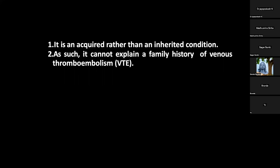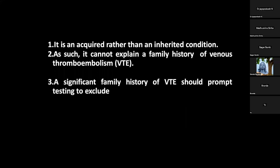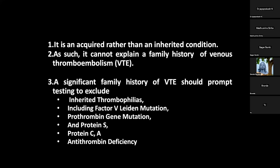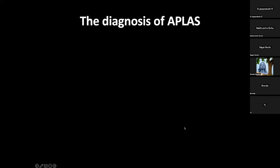Because it is acquired and not inherited, it cannot explain a family history of VTE. A significant family history of VTE should prompt testing to exclude inherited thrombophilias, including Factor V Leiden mutation, prothrombin gene mutation, and protein S, protein C, and antithrombin deficiency. If there is a VTE, we should investigate accordingly. Now, how do we diagnose APS?